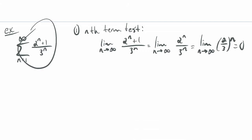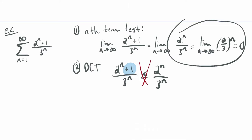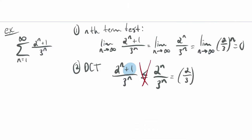Maybe I want to do a limit comparison with a geometric series. If I tried a direct comparison, showing 2 to the n plus 1 over 3 to the n is less than or equal to 2 to the n over 3 to the n doesn't work because adding 1 in the numerator makes it bigger. But 2 to the n over 3 to the n equals (2/3) to the n, which is geometric with r equals 2/3. So let's do the limit comparison test with b_n equals (2/3) to the n.